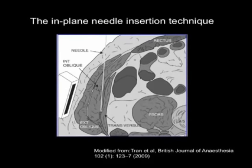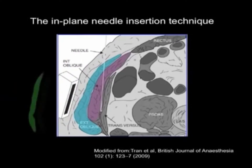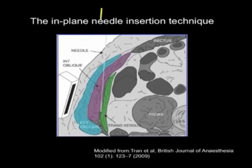Here is a cartoon demonstrating the appropriate needle insertion technique. Once again, the muscles are color-coded. The needle is inserted between the transversus abdominus muscle and the internal oblique muscle. The needle is indicated in yellow.